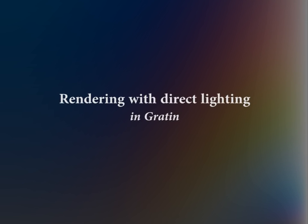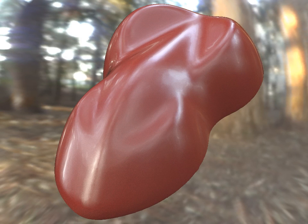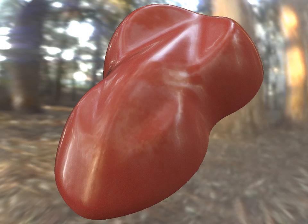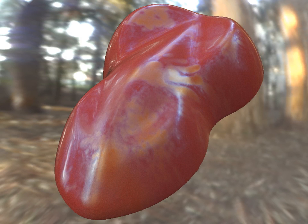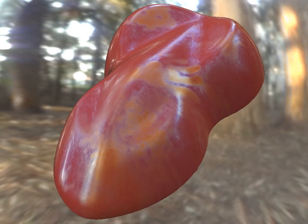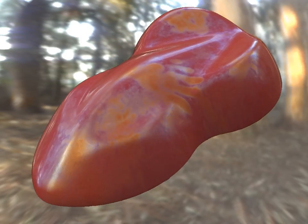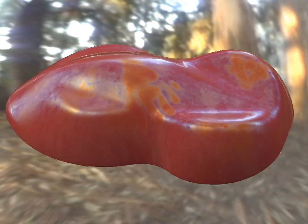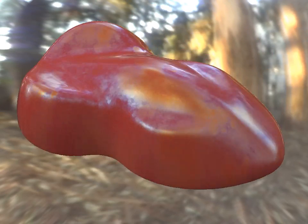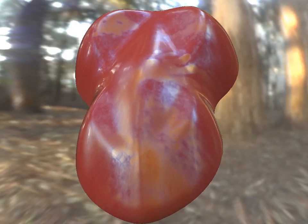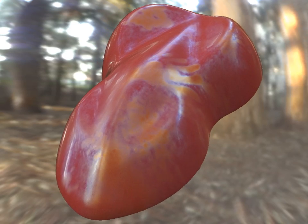We now present rendering results in direct lighting. We start with a dielectric material over a red diffuse body, to which we add a thin film of varying thickness. Our model behaves coherently when rotating either the object or the lighting environment.